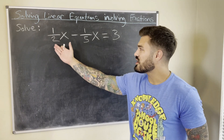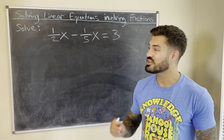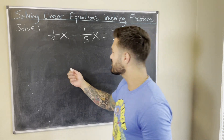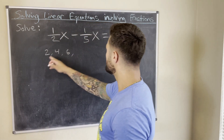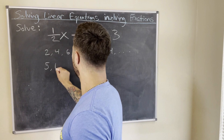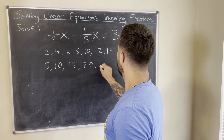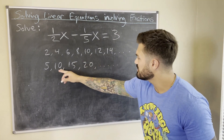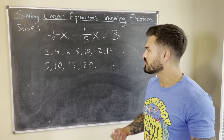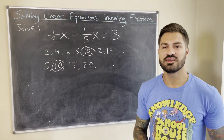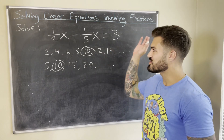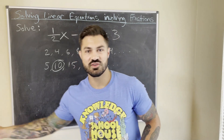That something turns out to be the least common denominator of the fractions, which is just the least common multiple of the denominators. We can find it by listing multiples: multiples of 2 are 2, 4, 6, 8, 10, 12, 14... and multiples of 5 are 5, 10, 15, 20... So we're looking for the least multiple they share in common, which is 10. So 10 is the least common denominator between one-half and one-fifth, and that's our magic number to multiply both sides by — it will clear all the fractions in one step.